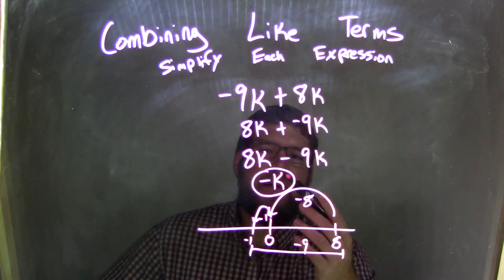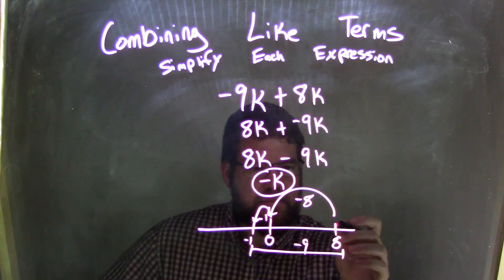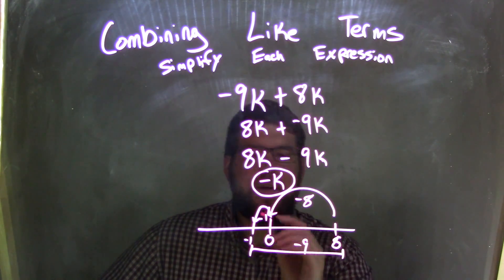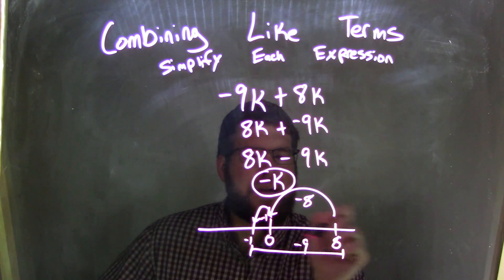So I rewrote that to be 8k minus 9k. Then I looked at my number line here and saw that if I subtract 8 from 8, I got 0 and 1 more. Subtraction here, 1 more, I got it to negative 1. And so a total of subtracting 9 units.